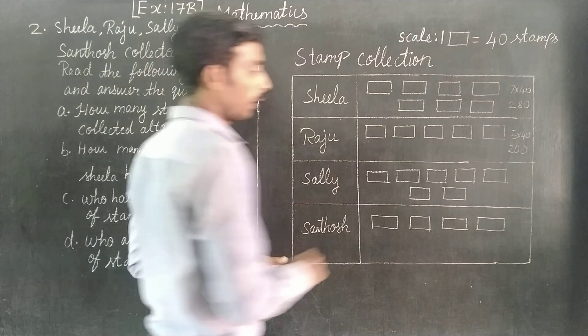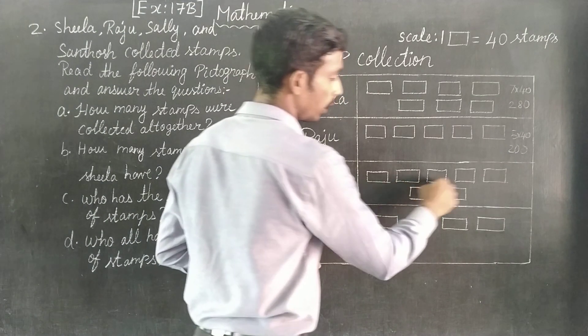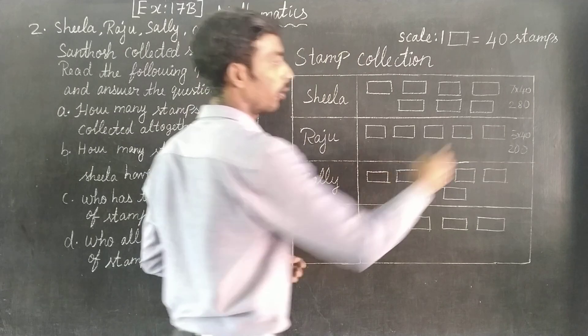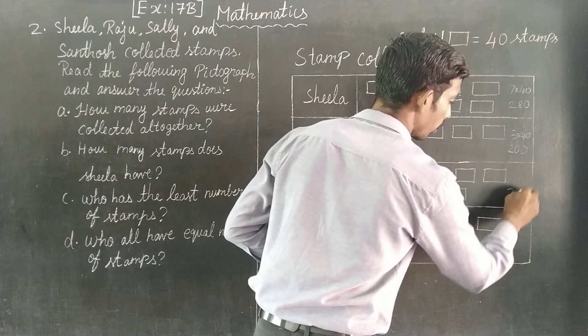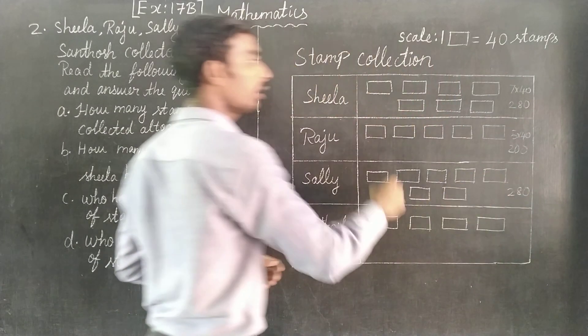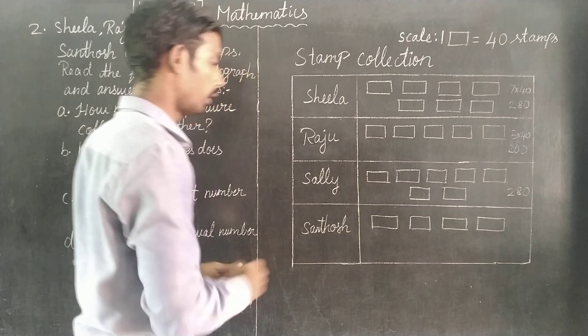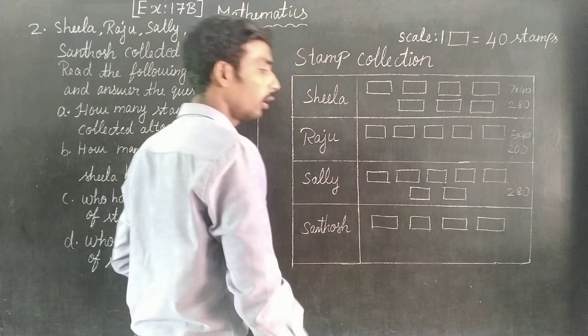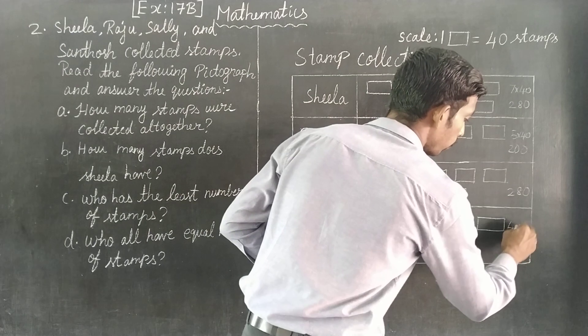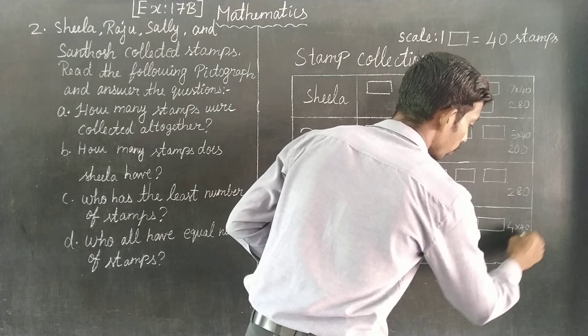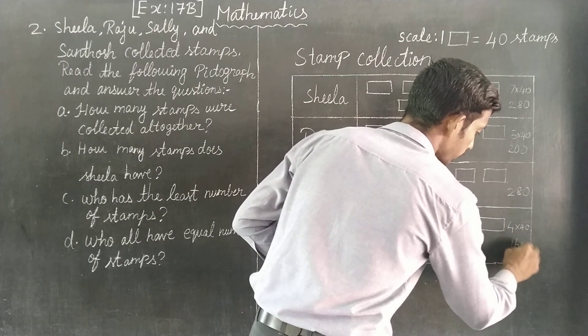Sally: one, two, three, four, five, six, seven boxes, that's 280. Sandosh: four boxes times 40 equals 160.